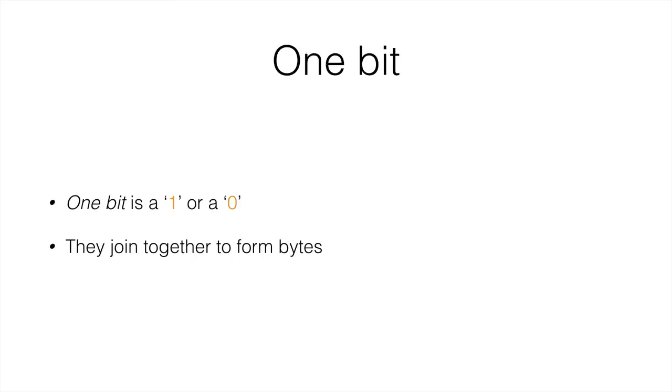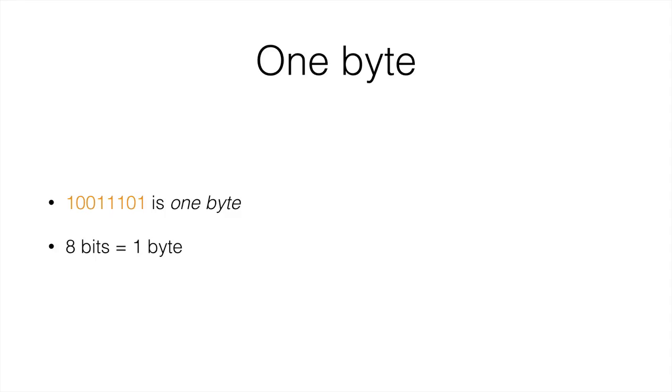As we've seen before, 1 bit is 1 or 0, and they join together to form bytes. 10011101 is 1 byte, because 1 byte is 8 bits. We've seen this in the previous section.